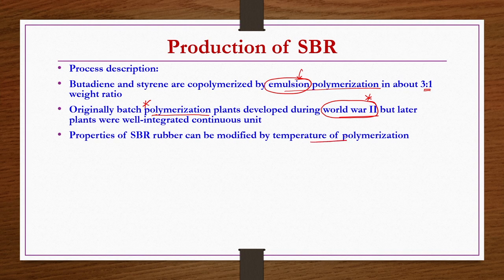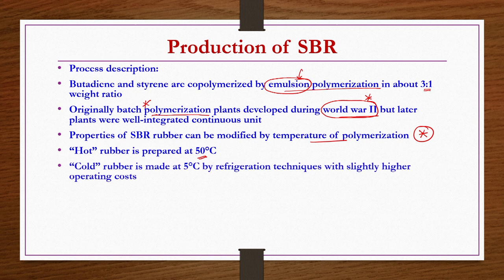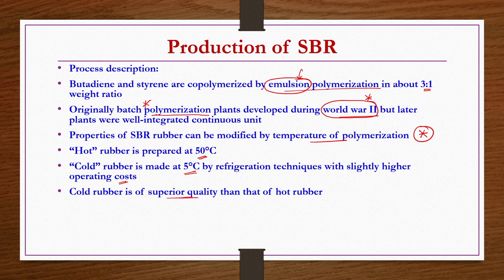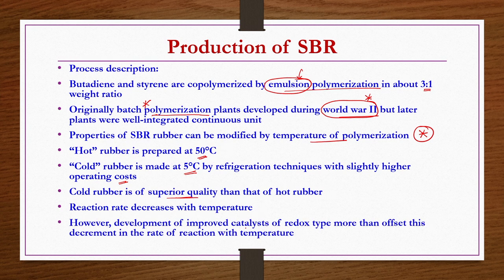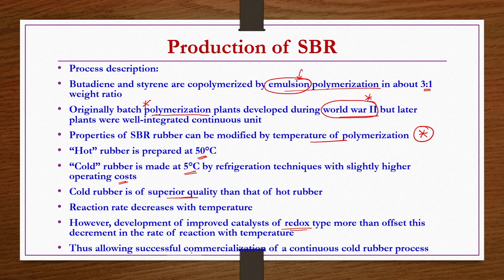Properties of SBR rubber can be modified by the temperature of polymerization. Hot rubber is prepared at 50 degrees centigrade, while cold rubber is prepared at 5 degrees centigrade using refrigeration. The operating costs are slightly higher for cold rubber, but the cold rubber is superior in quality. Although reaction rate decreases with lower temperature, development of improved redox-type catalysts more than offsets this decrement, allowing successful commercialization of the cold rubber process in continuous mode.